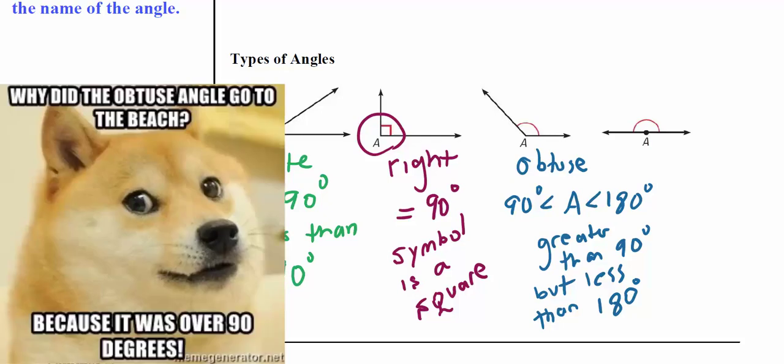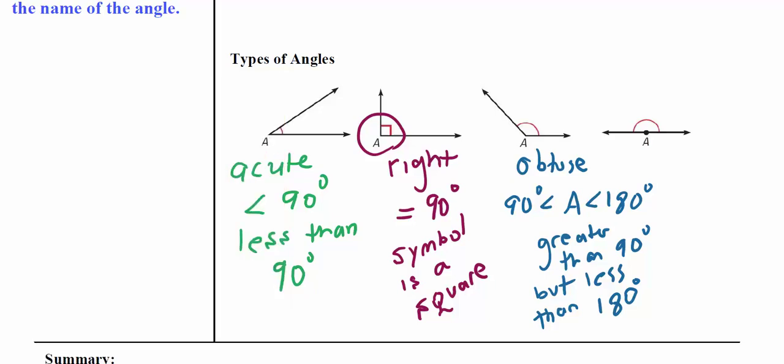An obtuse angle is one of our wider angles, greater than 90 - so 91, 92, for example - but smaller than 180. So it can't equal 90 and it can't equal 180, but it can be anything between those two.